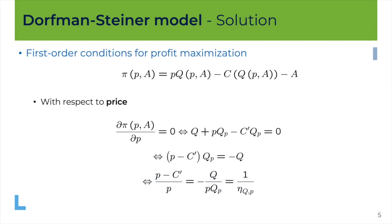First, let's look at the first-order condition with respect to price. Taking the first-order derivative of the profit function with respect to price: price changes revenue in two ways — directly through the price at which goods are sold, but also by affecting the quantity demanded. The price also affects cost because it changes the quantity demanded, which determines how costly it is to produce. The advertising expenditure A does not appear here. So we get the usual first-order condition stating that marginal revenue — the first two elements — should equal the marginal cost C'.